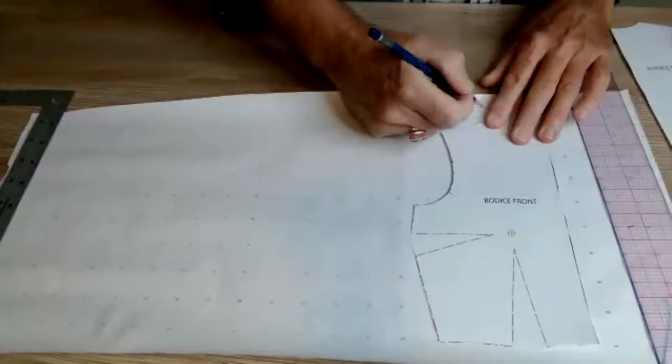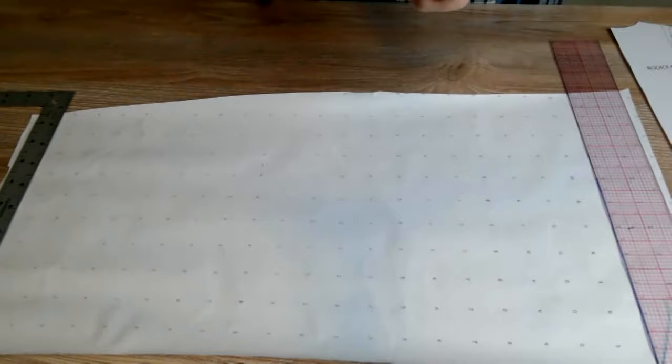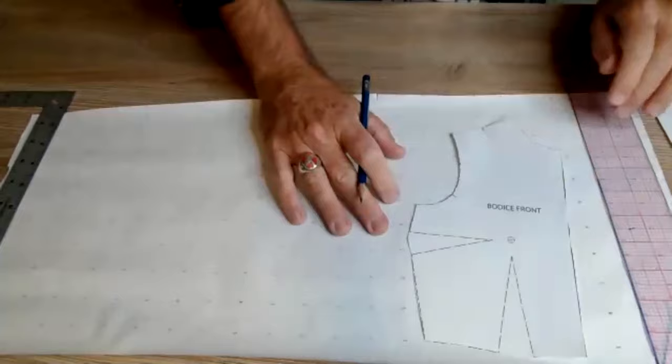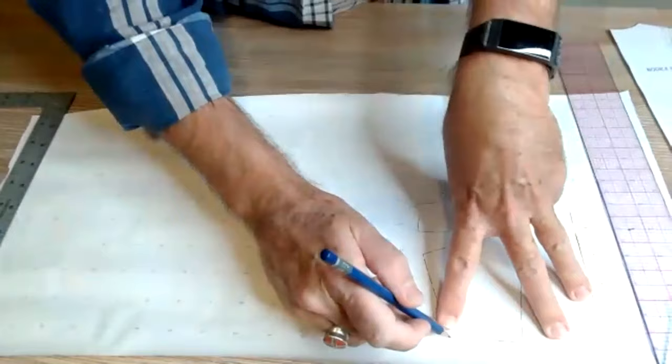How I found that center shoulder is I could have measured it, but what I did is I just folded it in half and creased it. I do that on large patterns too if I need to find a halfway point.